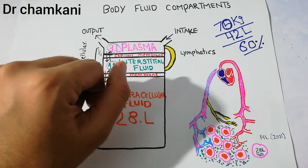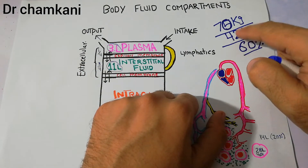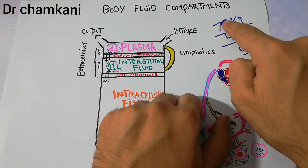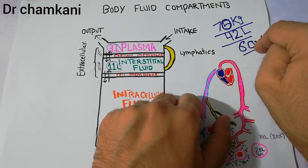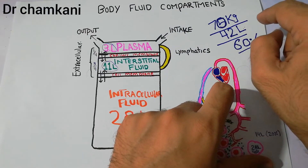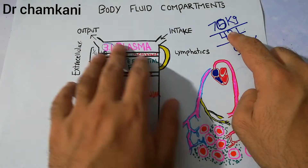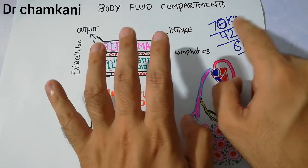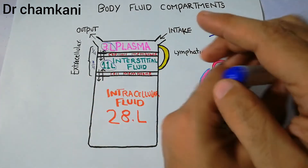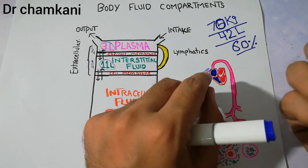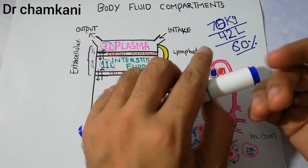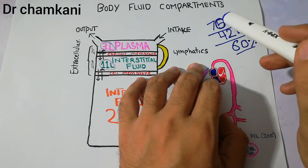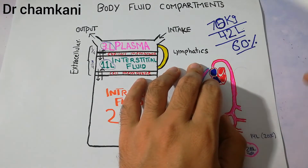In the average human adult of 70 kg, there is around 42 liters of fluid or water, and this is around 60% of the body weight. This 42 liters of fluid is distributed in different compartments and it keeps on changing. It is slightly different in males, slightly different in very young people and in aging people. In obese patients the fluid may be less due to higher fat content, and with increasing age this may also differ.